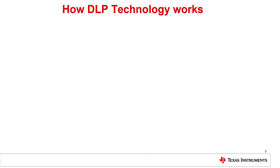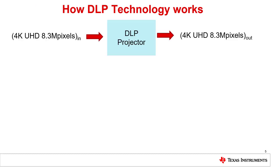This slide shows a very simplified diagram of how DLP technology and 3LCD technology work. For DLP technology, the projector receives a 4K UHD 8.3 million pixel input signal and projects a 4K UHD 8.3 million pixel output signal onto the screen.